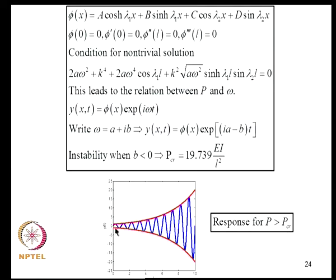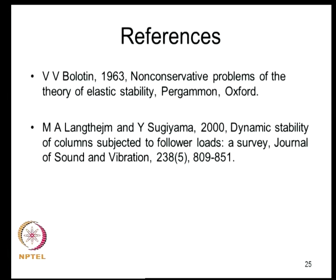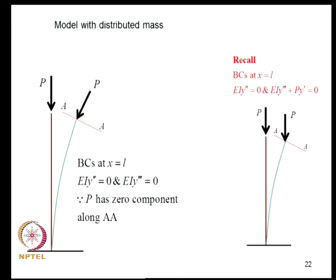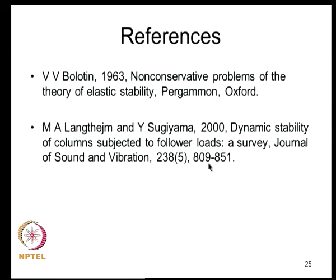If P exceeds P_critical the solution is oscillatory and grows — this is called flutter. Bolotin's classical book discusses these problems. There has been criticism in the existing literature asking whether there are practical situations where static loads remain tangential to the deformed axis. Apparently no experiment to date has characterized this. A review paper discussing these issues is available for further reading.